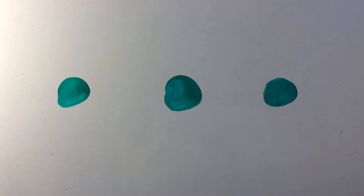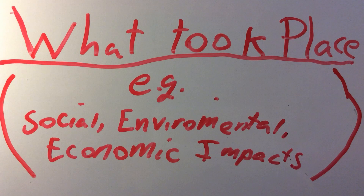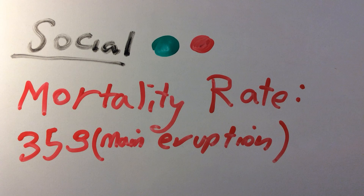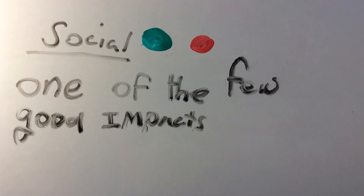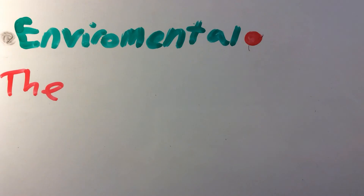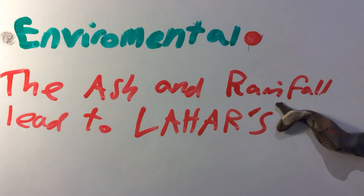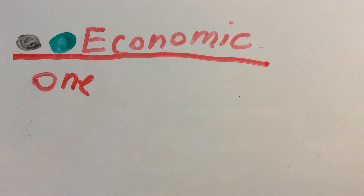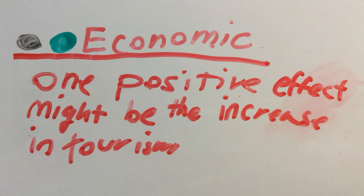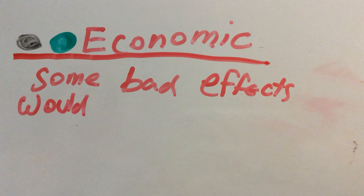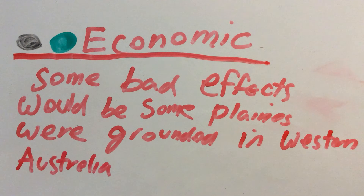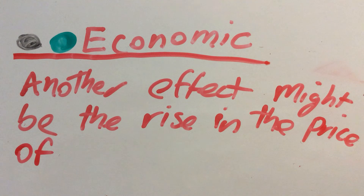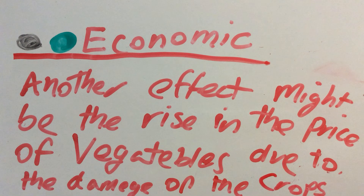Now to the big question — what took place? Some social impacts might be the mortality rate: 353 in the main eruption. One of the few good things might be tourism or fertile soil. The ash and rainfall led to lahars and sulphur dioxide. One positive effect might be the increase of tourism economically. Some bad effects could be planes grounded in Western Australia because of the ash cloud, and another effect might be the rise in price of vegetables due to the damage of crops.